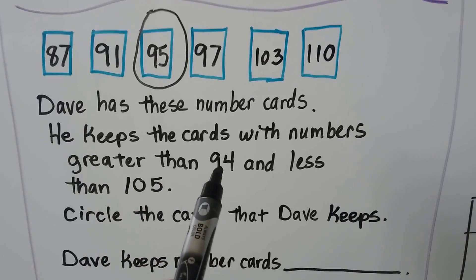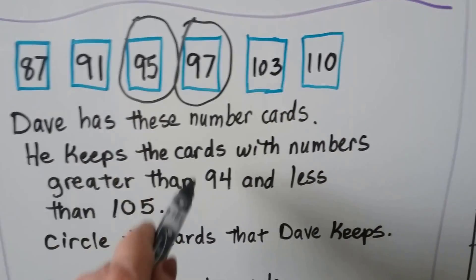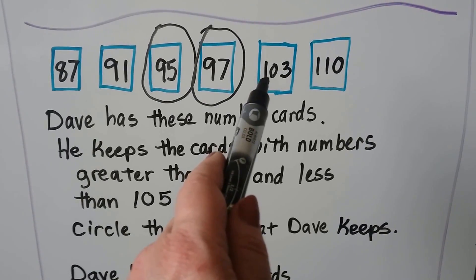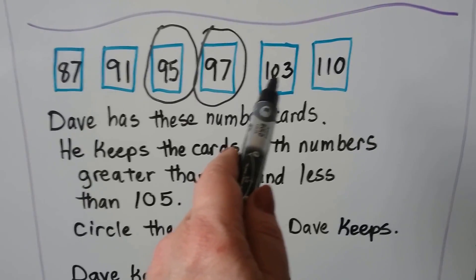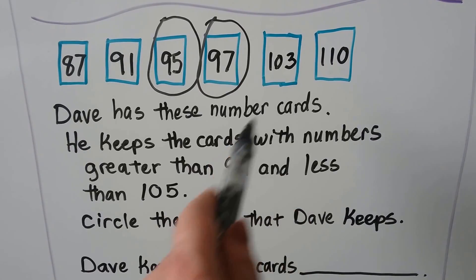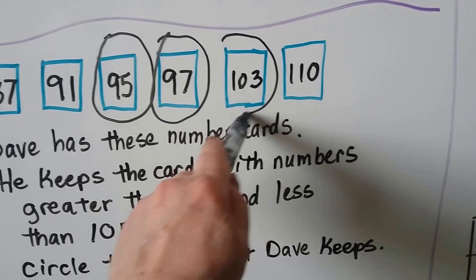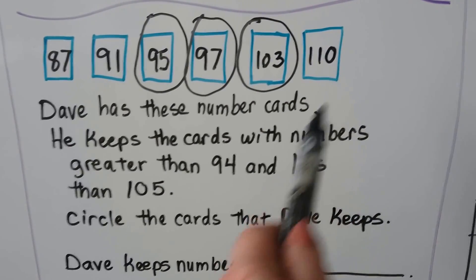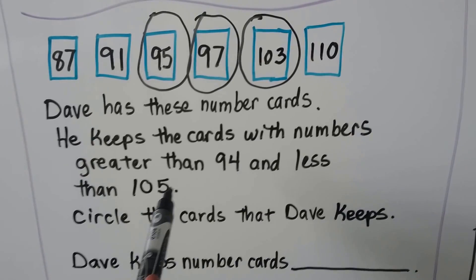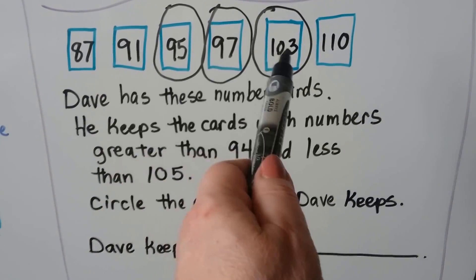Is 97 greater than 94? It's got seven ones and 94 has four ones — yes, that is greater. Now we have to be careful because it also has to be less than 105. Is 103 greater than 94? Yes. Is it less than 105? They both have ten tens, but 103 has three ones and 105 has five ones — so yes, it is less than 105. We can circle 103. How about 110? Is it less than 105? 110 is more than 105 — so no.